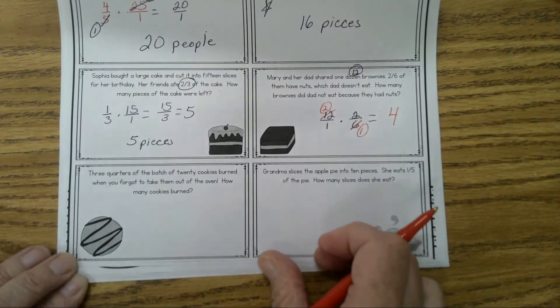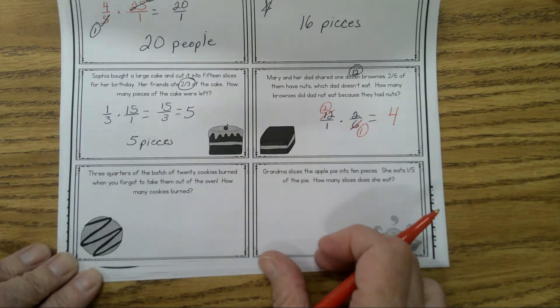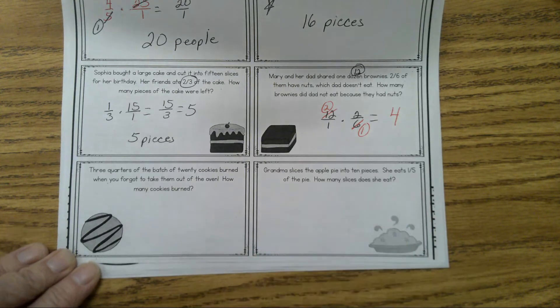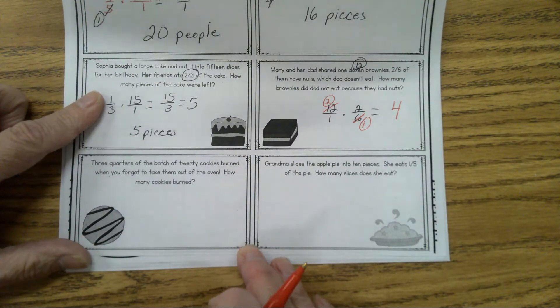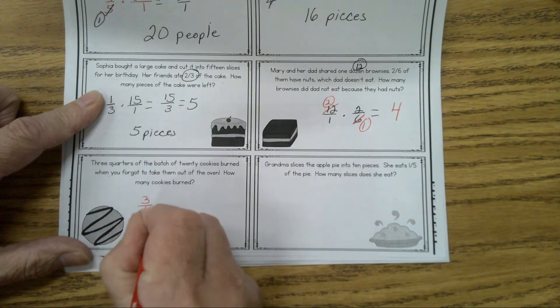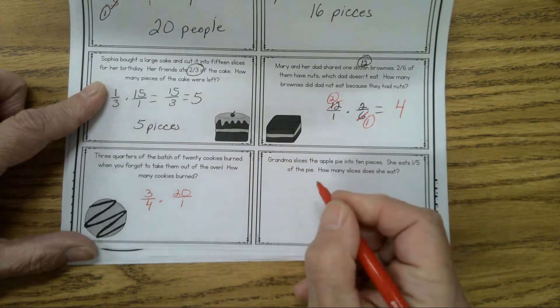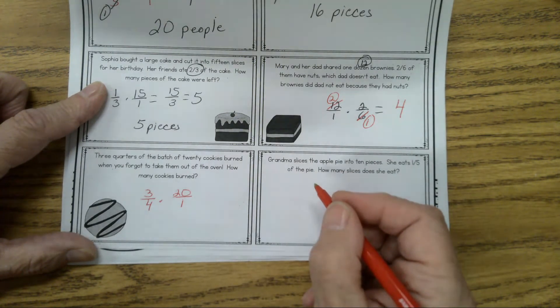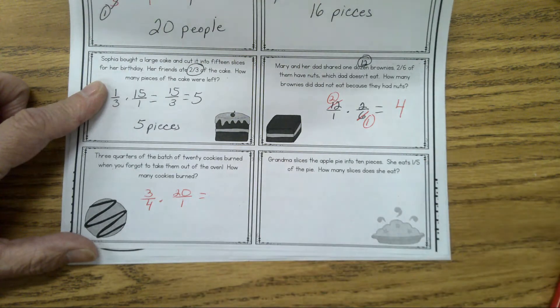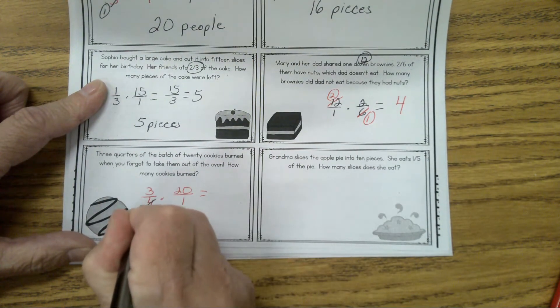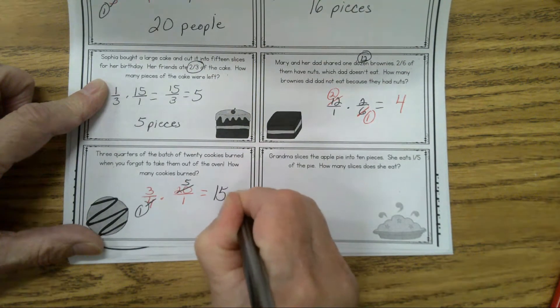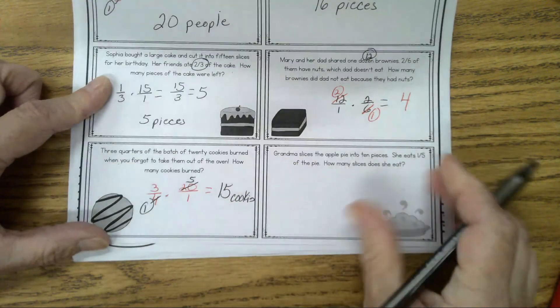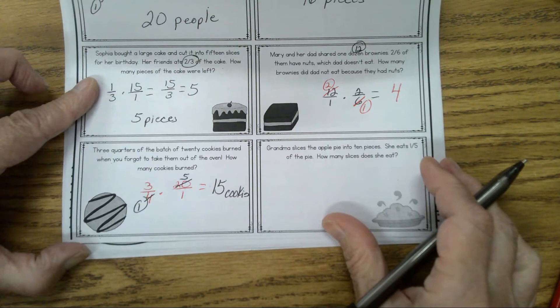Let's go on to the next problem. Do I have a volunteer to read this one? Student reads: 3/4 of the batch of 20 cookies. How many cookies burnt? 3/4 times 20. What a waste of good cookies. Sometimes I will eat burnt cookies. Have any of you ever ate burnt cookies? If they're not too badly burnt, they sort of have a crispy taste. 4 goes into 4 once, then 6. How many cookies? 15 cookies are burnt. Okay, we have 15 toasty cookies.